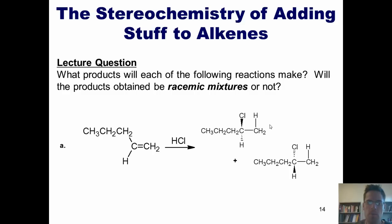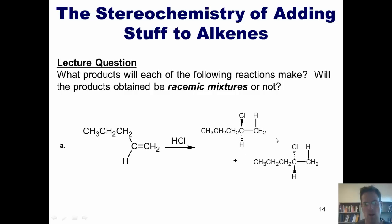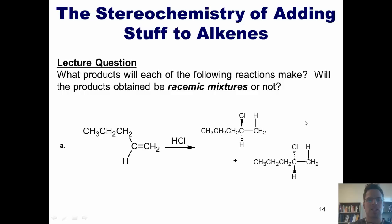Rather than drawing both enantiomers separately, one thing I can do is draw a wavy bond going to the chlorine, which indicates that I have both enantiomers — the wedged and the dashed — at this position. Alternatively, I could draw one enantiomer in my answer and write the words 'plus enantiomer' or 'plus the other enantiomer' next to it to indicate that both enantiomers are present.